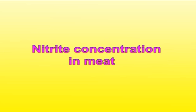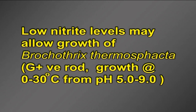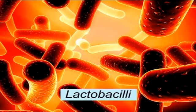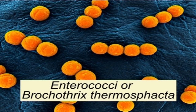Nitrite concentration in meat: high nitrite concentration favors lactic acid bacteria. Low nitrite levels may allow growth of Brochothrix thermospacta, a gram-positive rod that grows at 0 to 30 degrees Celsius from pH 5 to 9. Brochothrix thermospacta is an important spoilage bacterium in anaerobically stored meats kept at low temperature, but is inhibited by nitrite. Slimy spoilage occurs on the surface and is caused by the buildup of cells of yeast, Lactobacilli, Enterococci or Brochothrix thermospacta.